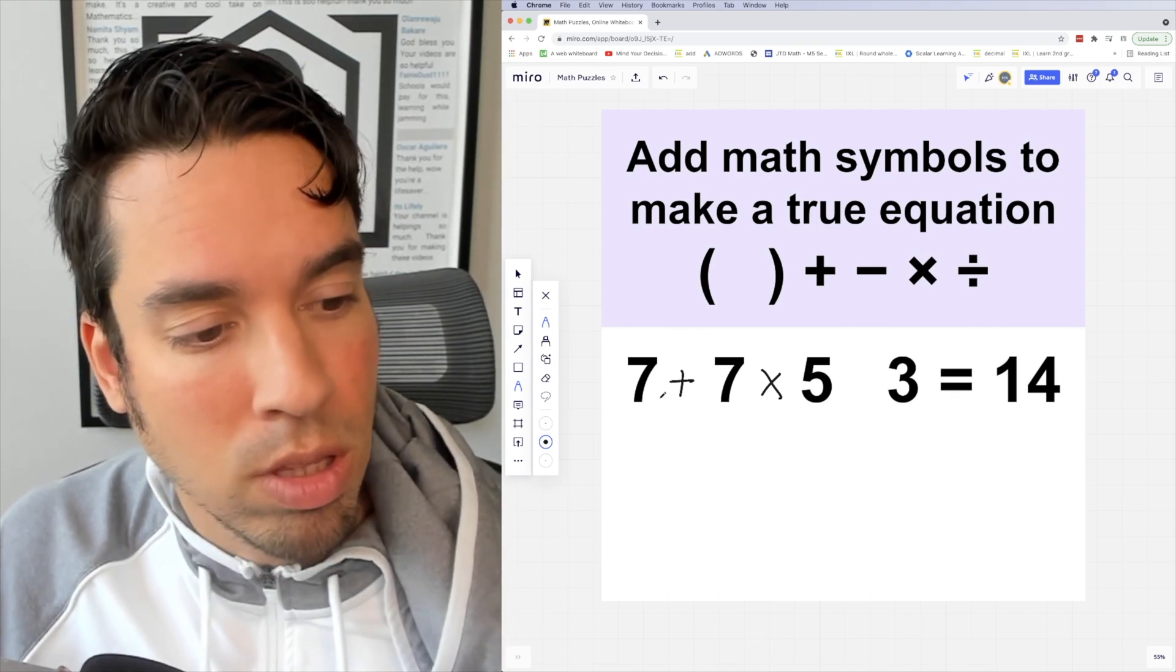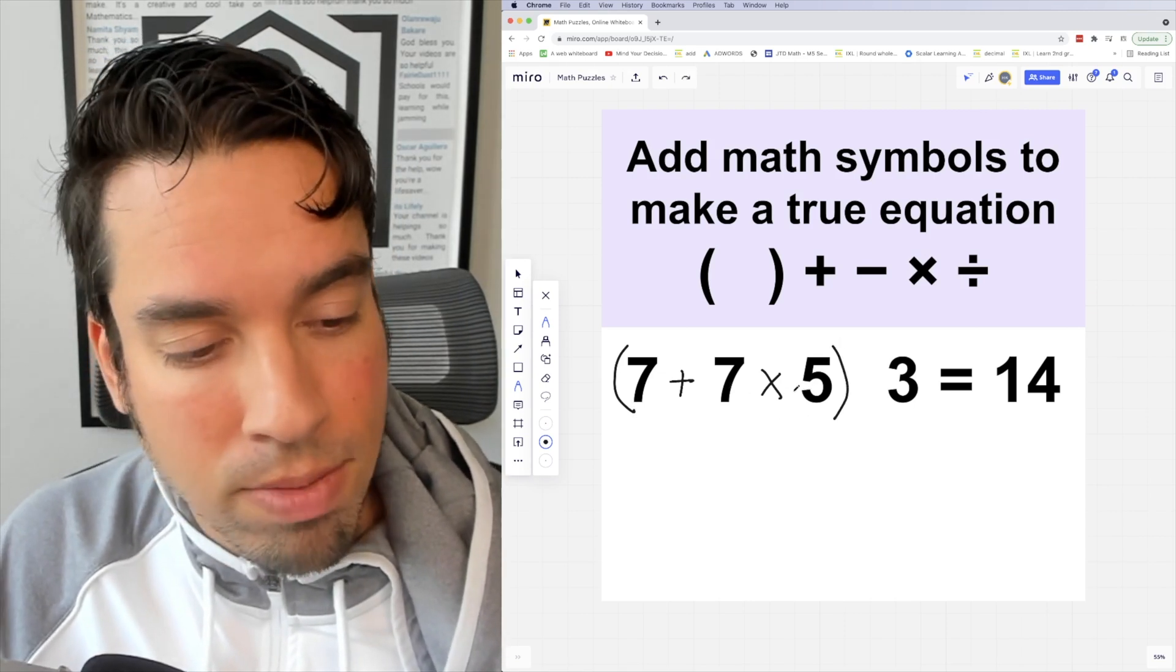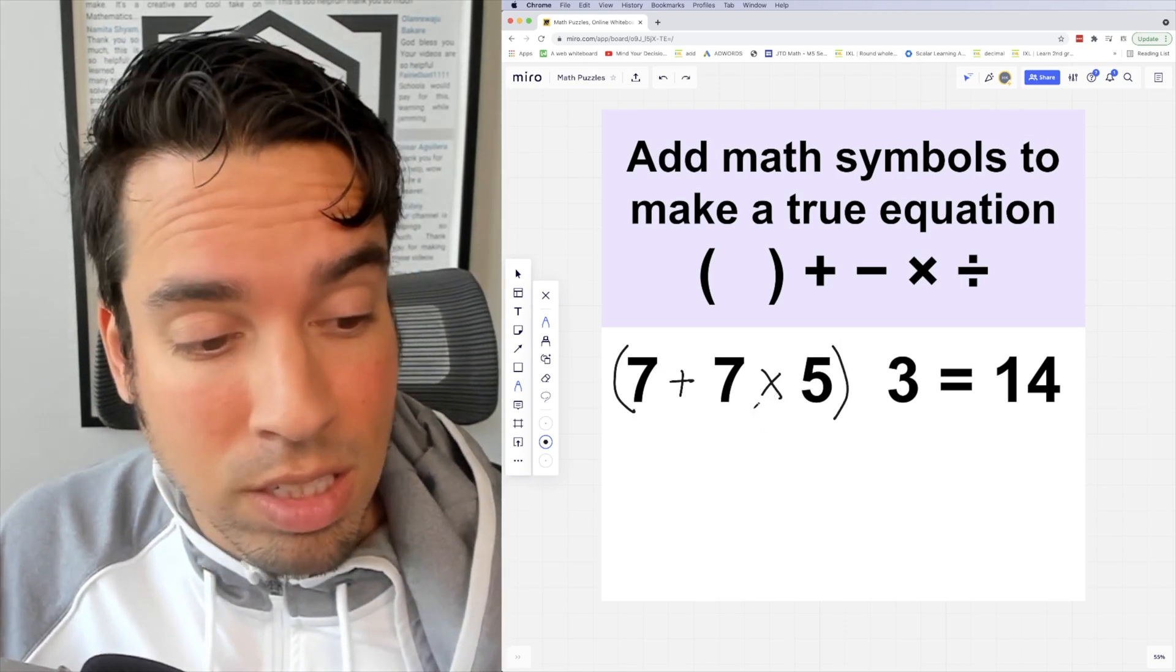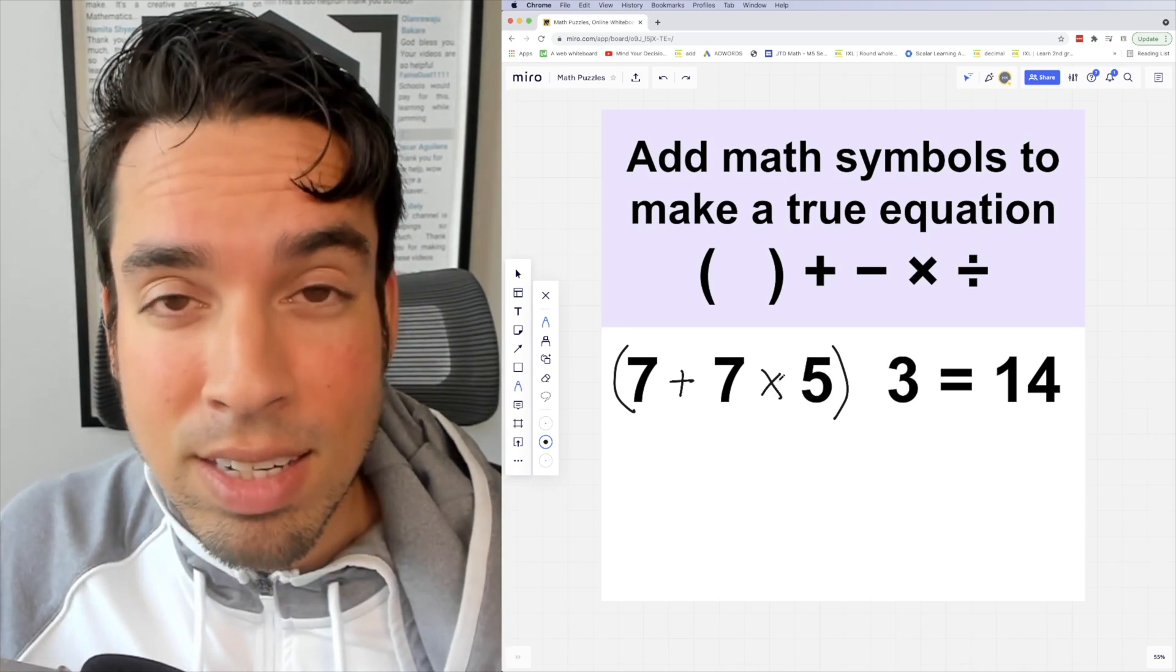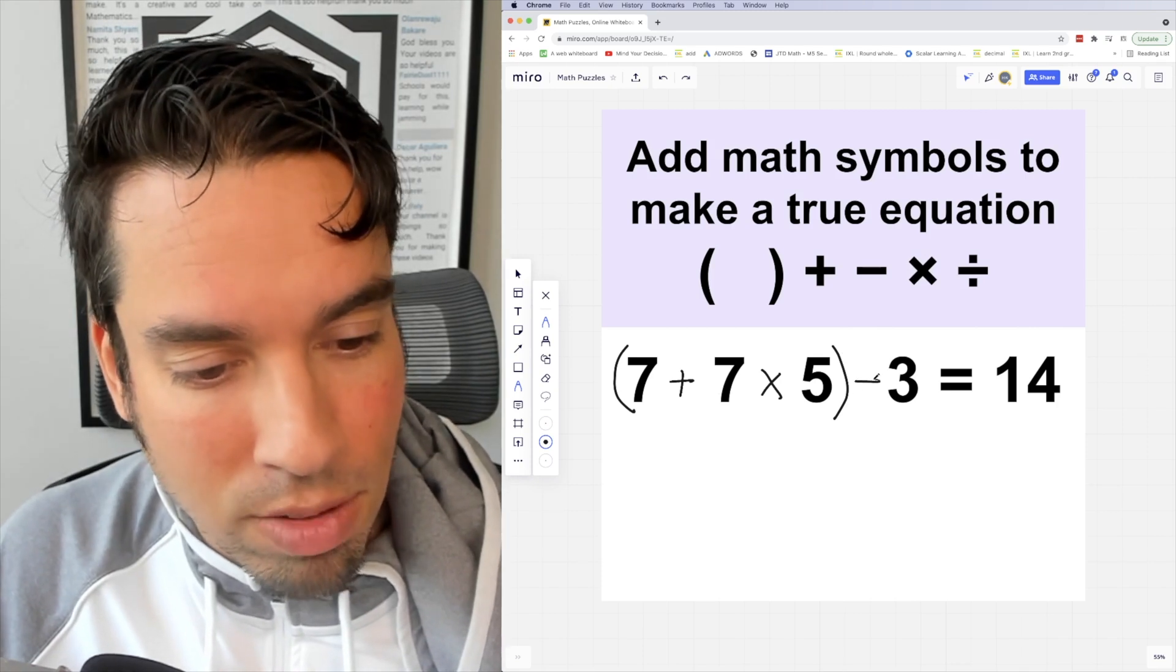I'm going to put both of these guys in parentheses. Now why am I cool with 7 times 5 not being in a separate set of parentheses? Because multiplication is going to naturally happen before addition. Last but not least, since this gives us 42, all I got to do is divide by 3 to give us 14.